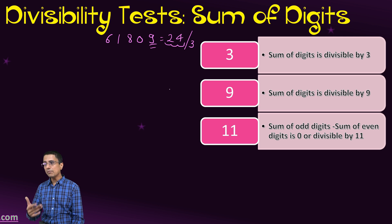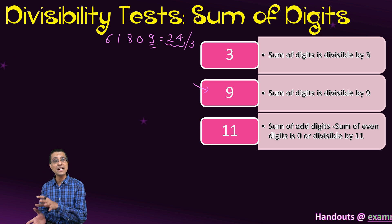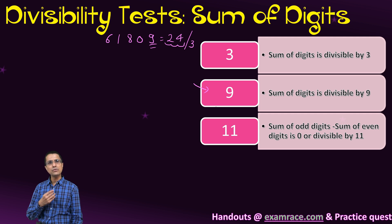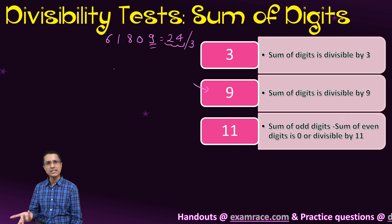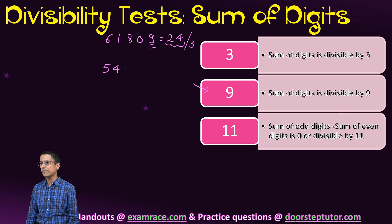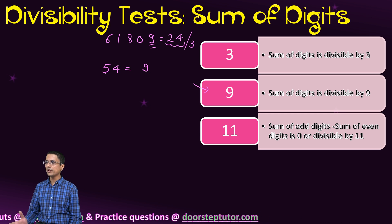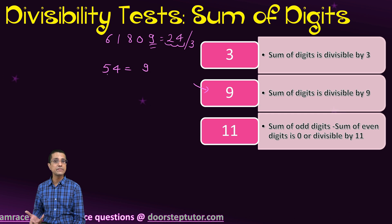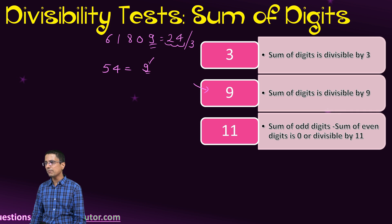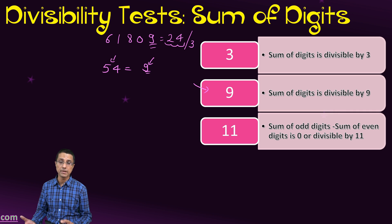If the sum of the digits is divisible by 9, the number is actually divisible by 9. For example, let us look at 54: 5 plus 4 is 9, and of course we know that 54 is divisible by 9. So the sum of the digits is divisible by 9, and therefore the number itself is divisible by 9.